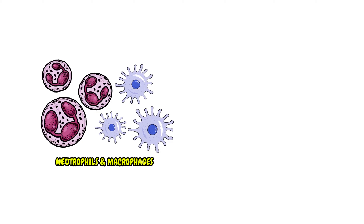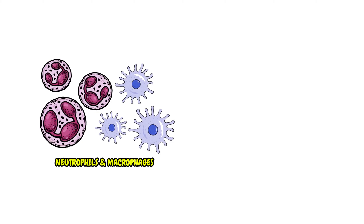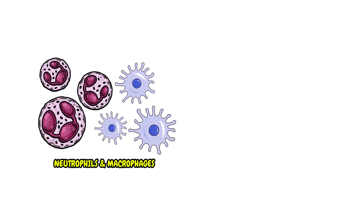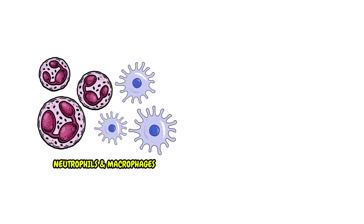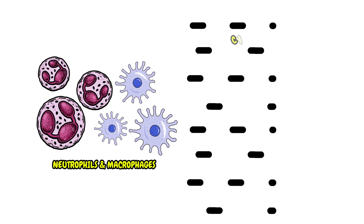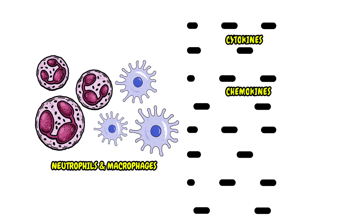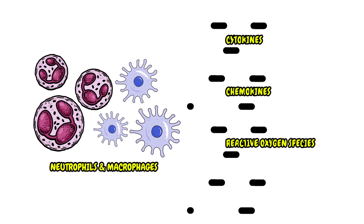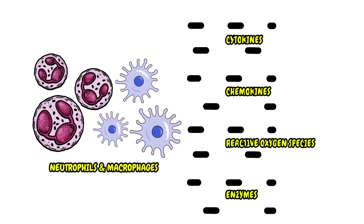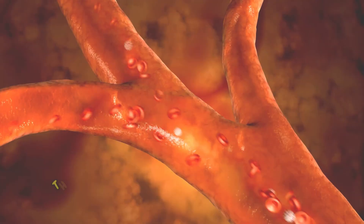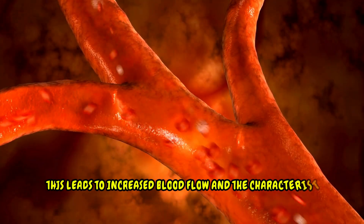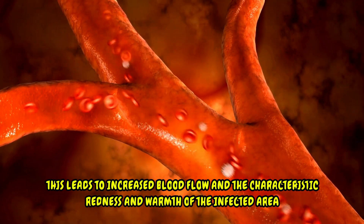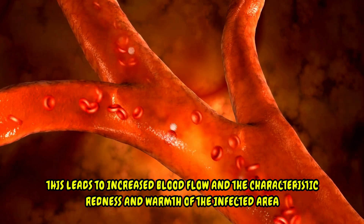White blood cells, especially neutrophils and macrophages, migrate to the site of infection and release various cytokines, chemokines, reactive oxygen species, and enzymes to kill the bacteria. This leads to increased blood flow and the characteristic redness and warmth of the infected area.